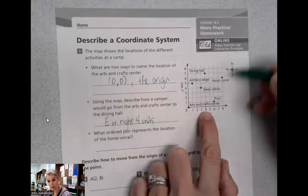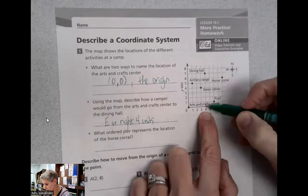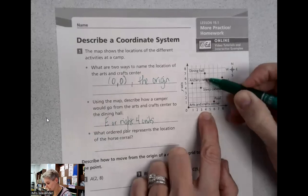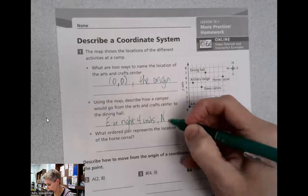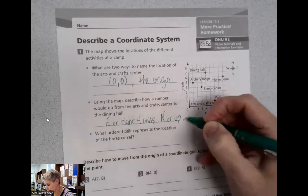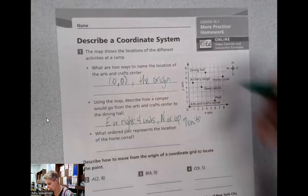And then we have to go which way? North or up. One, two, three, four, five, six, seven units. Then north or up seven units. And that would get us to the dining hall.